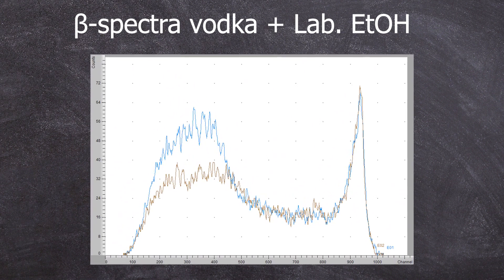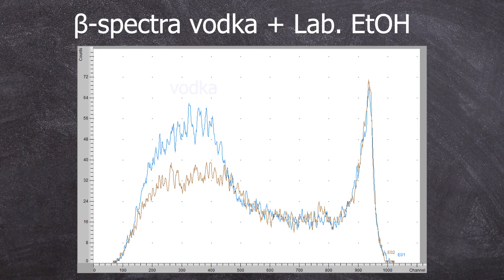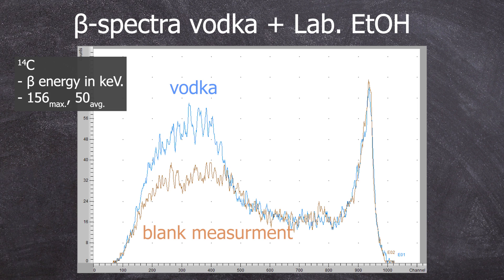So, now the results. Here we can see the vodka example in blue and the background in dark-ish. We clearly have radioactive material in the vodka. And judging by the position of the peak on the x-axis, this can only come from carbon-14 with a beta energy of a maximum 156 keV and an average of 50 keV.